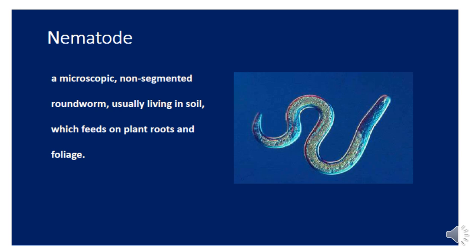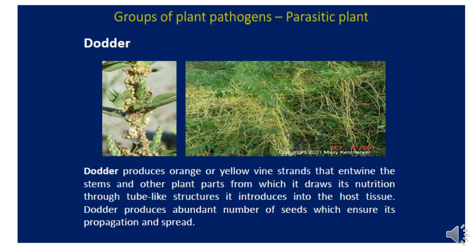Nematodes are classified under Animalia. A nematode is a microscopic, non-segmented roundworm usually living in the soil, which feeds on plant roots and foliage — but mainly feeds on plant roots — causing a disease called root-knot nematode disease. Regarding parasitic plants: dodder is a parasitic plant that produces orange or yellow fine thread-like strands that wind on the stem of the plant and absorb nutrients through tube-like structures called haustoria, through the tissues, and produces abundant seeds to ensure reproduction.